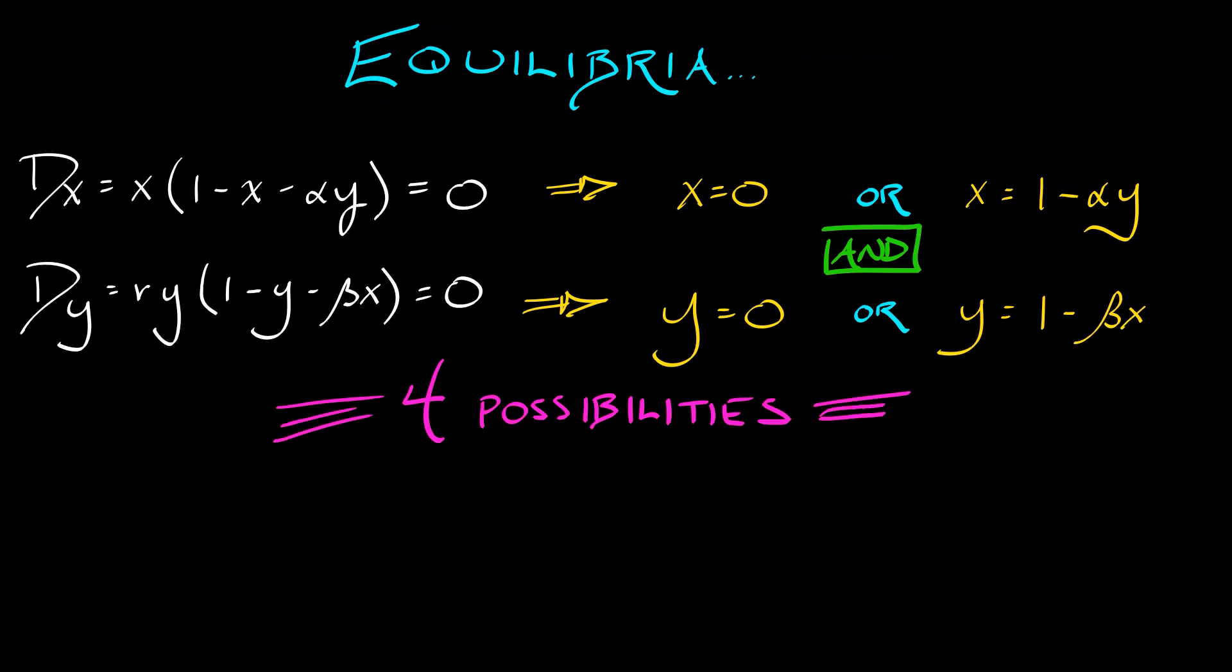The first one is obviously at 0, 0. What that means is everybody's dead. The second equilibrium, X equals 1, Y equals 0. That corresponds to humans being at full population size, robots being wiped out.